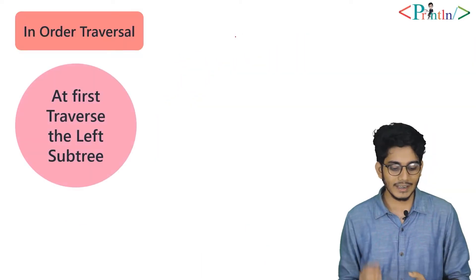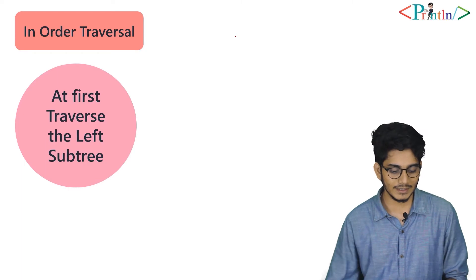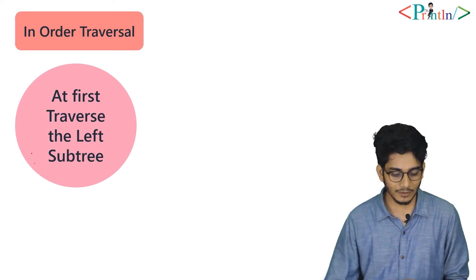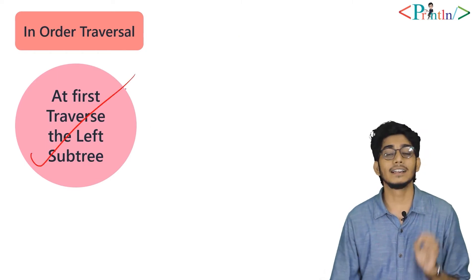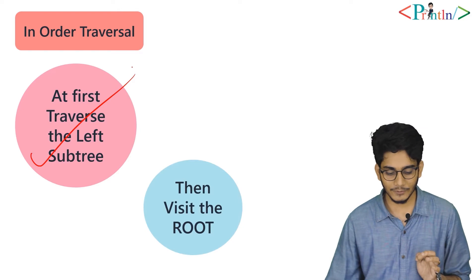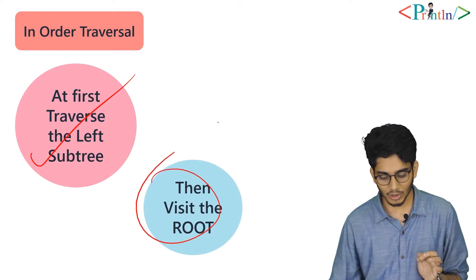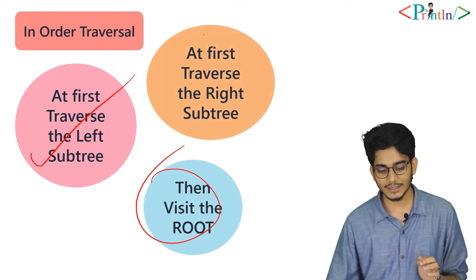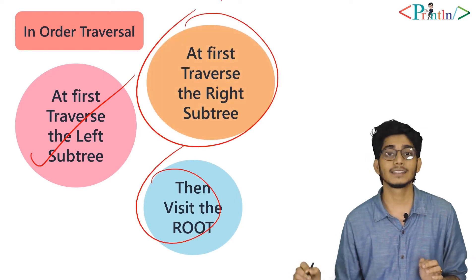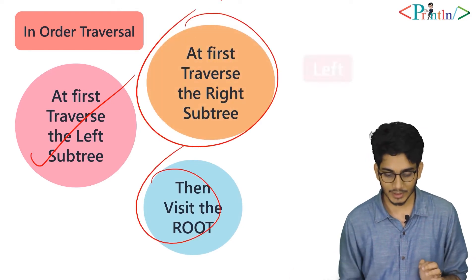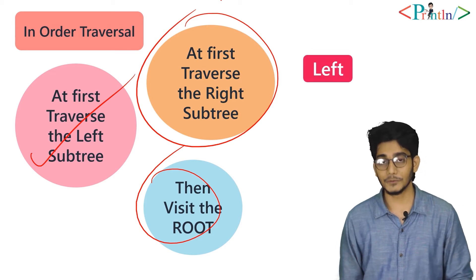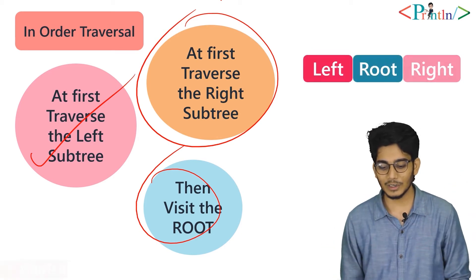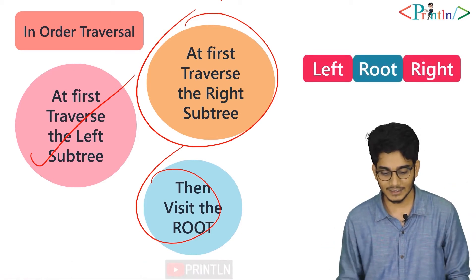In in-order traversal, at first we traverse the left subtree, then we visit the root node, then we traverse the right subtree. So at first we will go for the left, then we will go for the root, then we will go for the right.